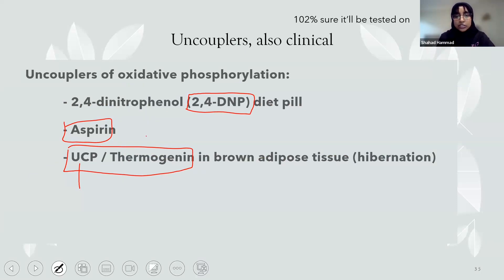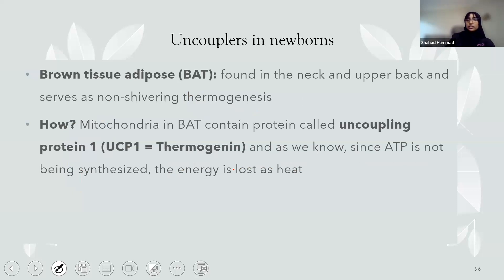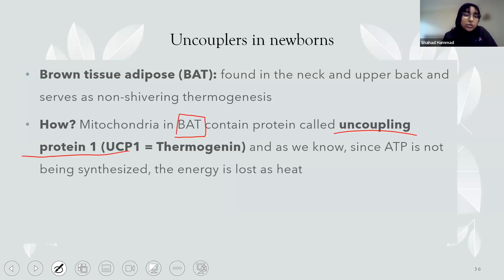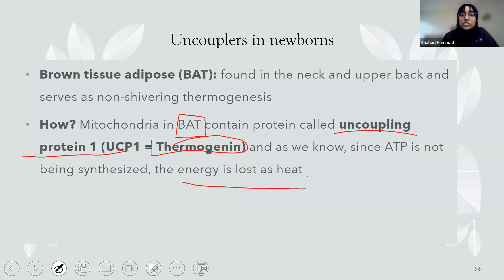Expanding on thermogenin in brown adipose tissue. Newborns have a lot of brown adipose tissue, mostly in the neck and upper back, which helps them produce heat without shivering. The mitochondria in brown adipose tissue contain uncoupling protein 1, also called thermogenin. Because the hydrogen atoms leak back in without going through ATP synthase, energy is released as heat instead of being used to make ATP — that's how brown adipose tissue generates warmth in newborns.